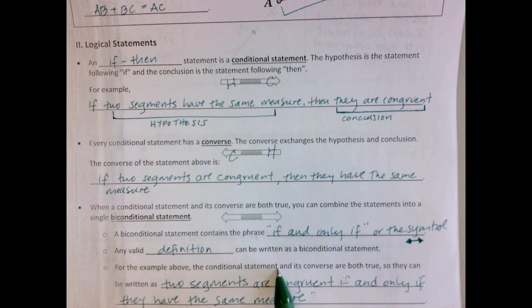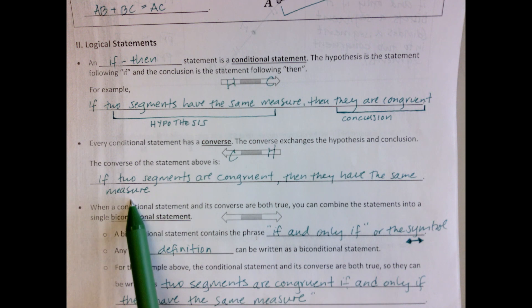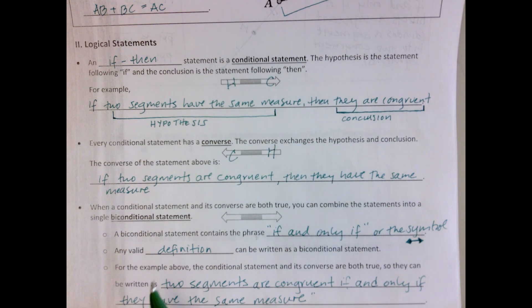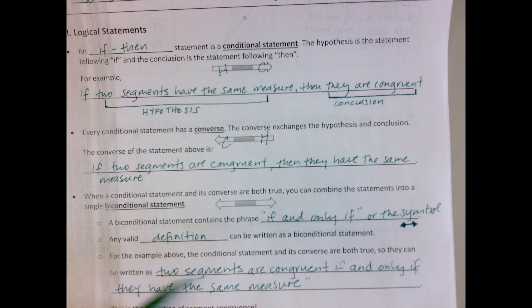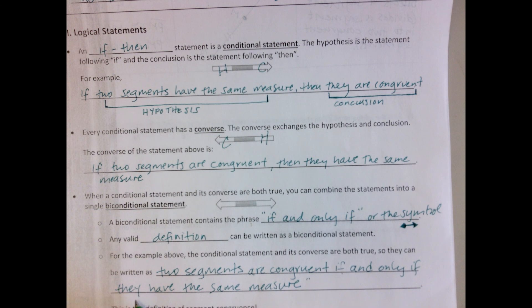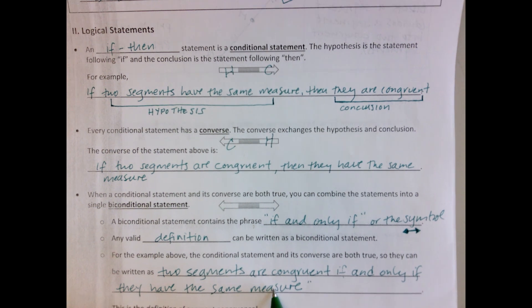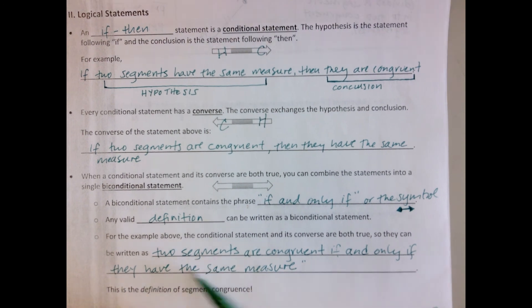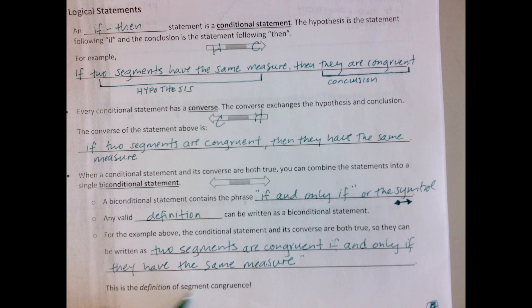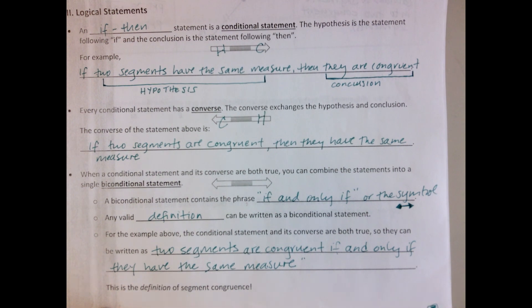For the example above, the conditional statement and its converse are both true. Yes, they are, because if two segments are congruent, then they have the same measure. That's true. If two segments have the same measure, then they are congruent. That's true. So the conditional statement and its converse are both true, so they can both be written as two segments are congruent if and only if they have the same measure. And that is also true. And this essentially is the definition of segment congruence.